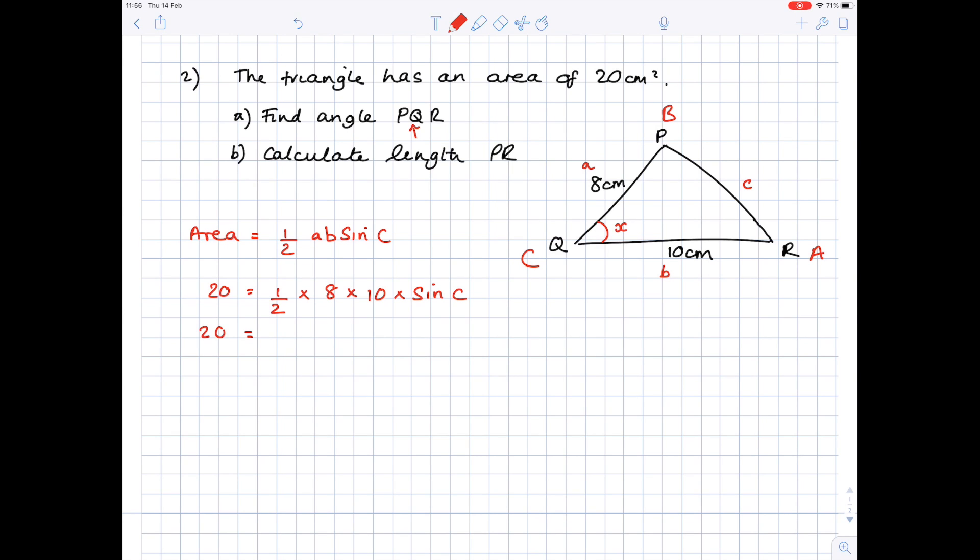Then let's simplify it down. So do half times 8, which is 4, times 10, which is 40. And then in order to sort that out a bit, you need to get rid of that 40 on the right-hand side. How do you do that? Well, divide both sides by 40. So it's 20 divided by 40 equals sine C. So sine C equals a half because 20 divided by 40 is a half. And now you need to do inverse sine in your calculator on 0.5 in order to work out angle C. And that is 30 degrees.